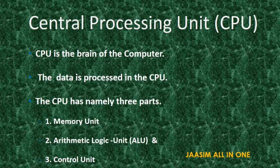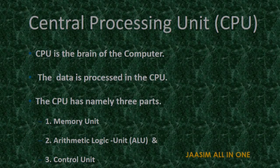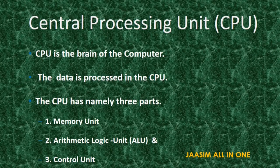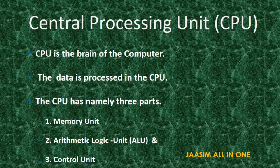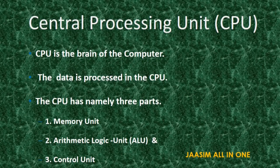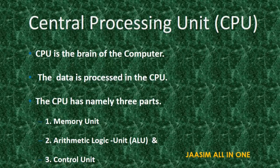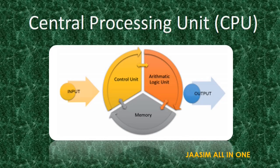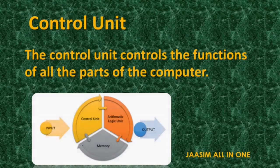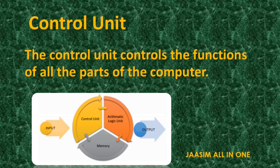Central Processing Unit, simply known as CPU, is the brain of the computer. The data is processed in the CPU. The CPU has three parts: Memory Unit, Arithmetic and Logic Unit simply known as ALU, and Control Unit. The Control Unit controls the functions of all parts of the computer, like mouse, keyboard, monitor, and printer.